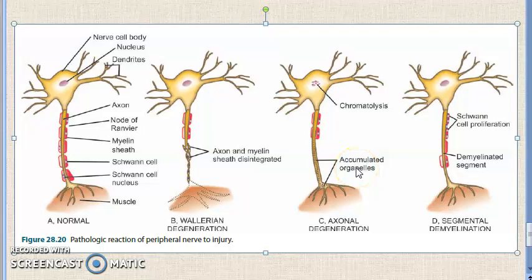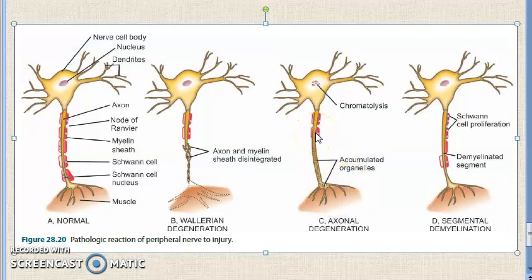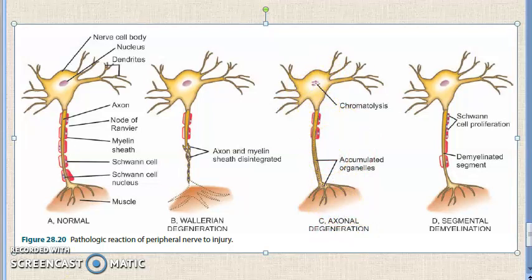Coming to axonal degeneration — here the degeneration of the axon begins at the peripheral terminal and proceeds backwards towards the nerve cell body. The cell body undergoes chromatolysis, which you can see in the diagram. There is Schwann cell proliferation in the region of axonal degeneration. The loss of axonal integrity occurs, and changes similar to Wallerian degeneration are present, but the regeneration reaction is limited or absent. Key point: chromatolysis occurs in axonal degeneration.